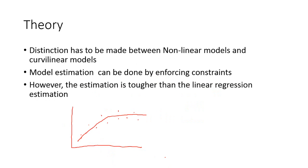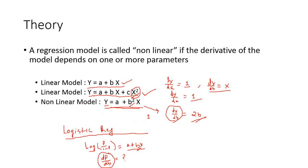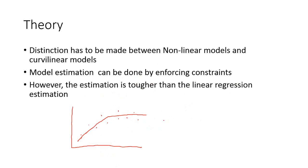There is a distinction that should be made between nonlinear models and curvilinear models. The second example, y = a + bx + cx², is a curvilinear model. When you plot this model you get a curved graph, so it looks like a nonlinear case, but it is actually known as a curvilinear model. Even though it looks nonlinear visually, by the definition of nonlinear regression it is not a nonlinear model.